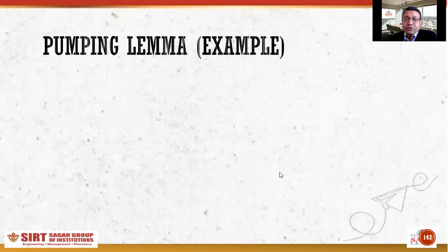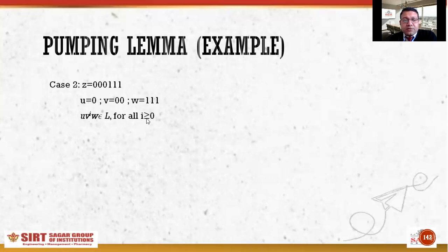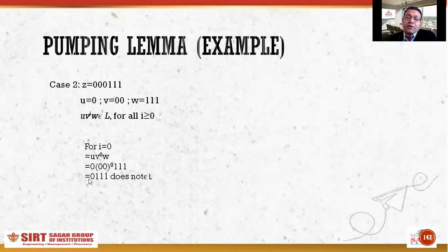Since i = 2 does not satisfy u·v^i·w ∈ L, Case 1 fails. So we try Case 2: u = 0, v = 00, w = 111. Checking for i = 0, we get 0·111 = 0111, which does not belong to L because the number of zeros is not equal to the number of ones. Case 2 also fails.